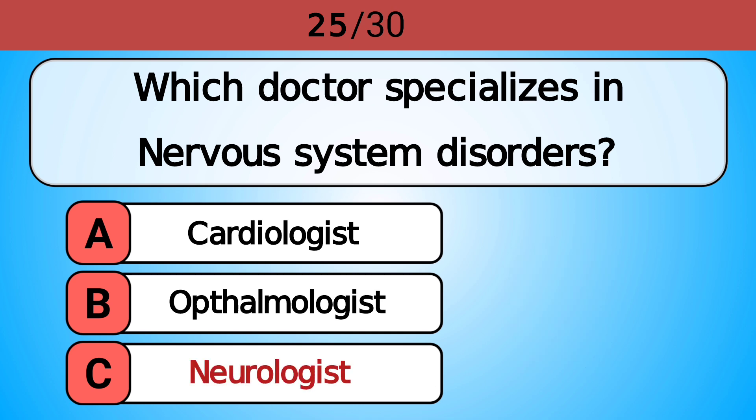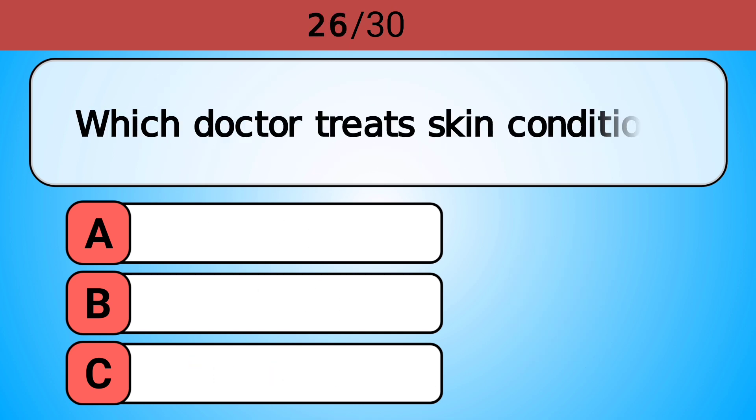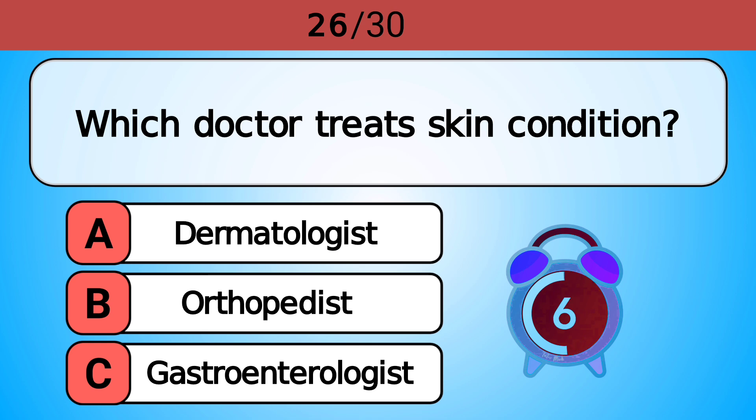Which doctor specializes in nervous system disorders? Answer C, neurologist. Which doctor treats skin conditions? Answer C, dermatologist.